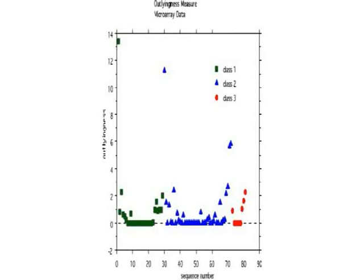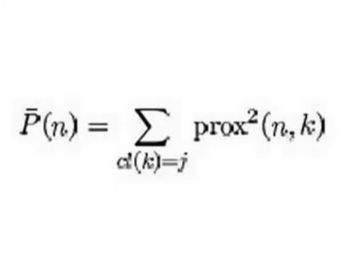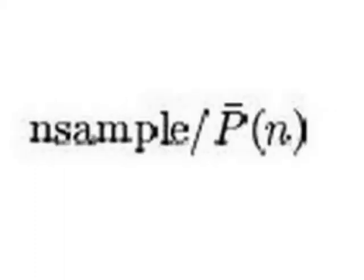The average proximity from case N in class J to the rest of the training data class J is given by this expression. The raw outlier measure, represented by the expression you can see on your screens, will be large if the average proximity is small. After that, it is useful to find the median of these raw measures and their absolute deviation within each class. The next step is to subtract the median from each raw measure and divide by the absolute deviation to arrive at the final outlier.